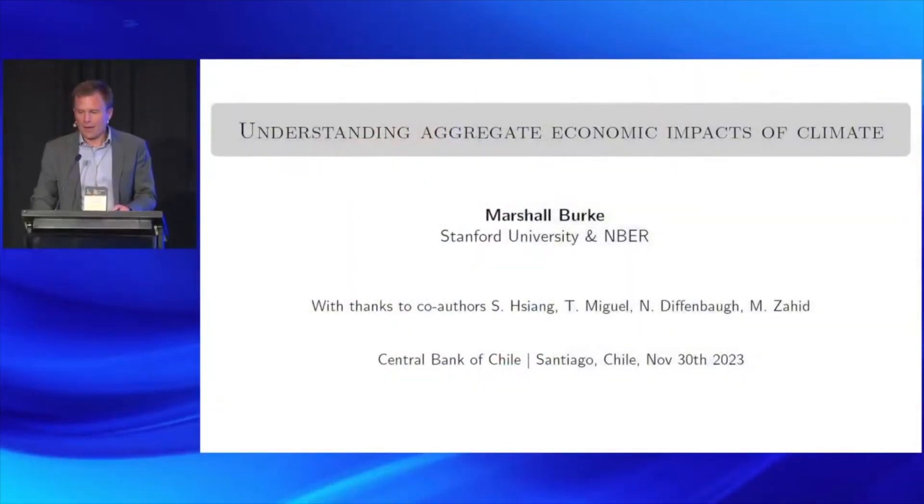You can think of this as taking some of the methods that Tama just showed you and some of the machinery and applying them to more aggregate data, to try to make causal statements about the relationship between past variation in climate and aggregate outcomes, and then heroically project forward to think about what future damages might be — guided by an understanding of how these aggregates have responded to changes in climate in the recent past.